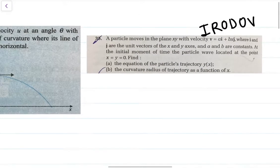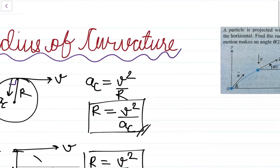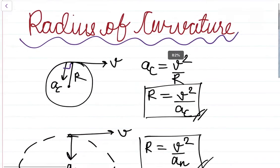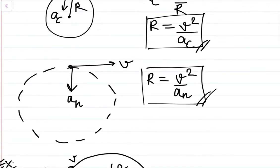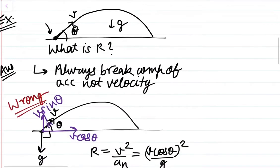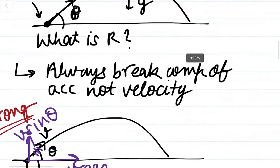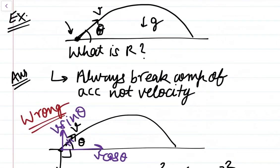In the last lecture I told you about the basic formula of radius of curvature, that is V squared upon aₙ, where aₙ is the normal component of acceleration. And I also told you that always break up the components of acceleration, not velocity.